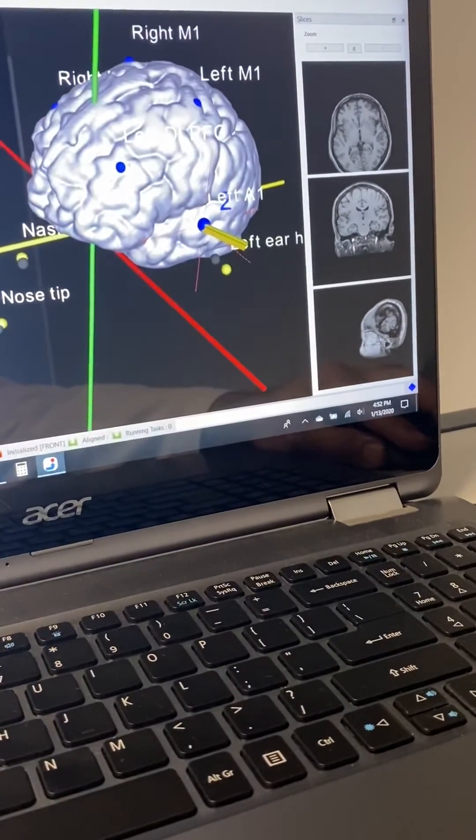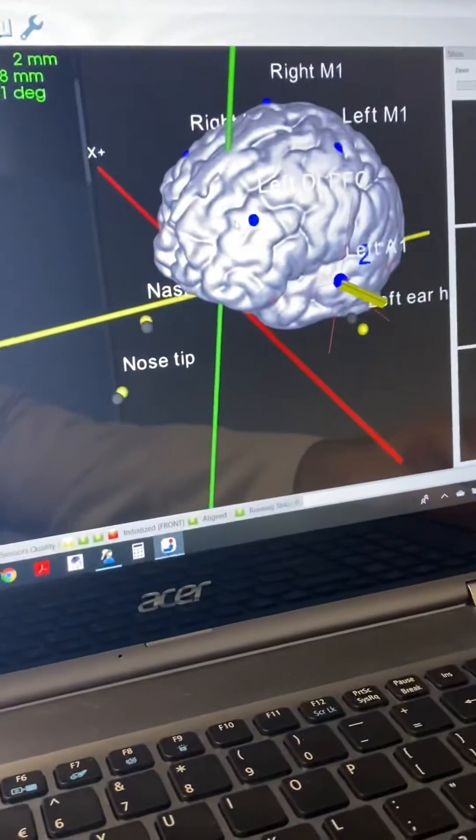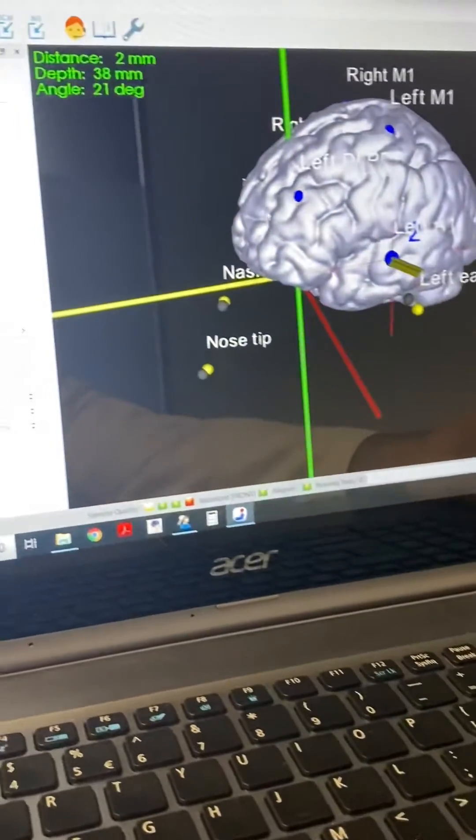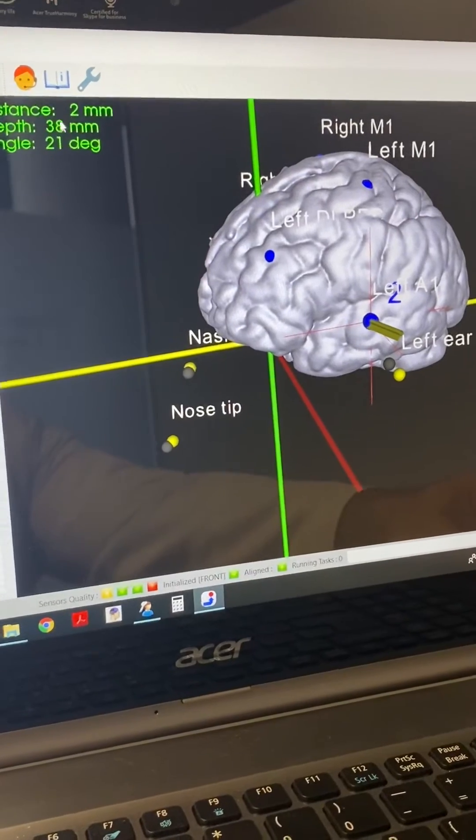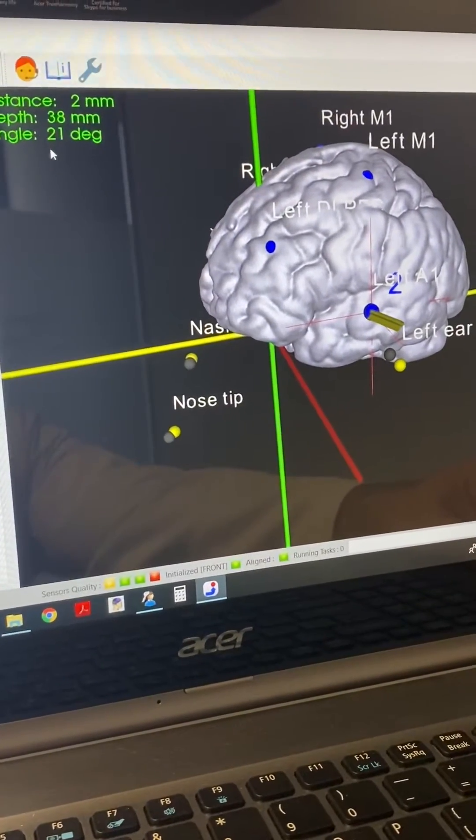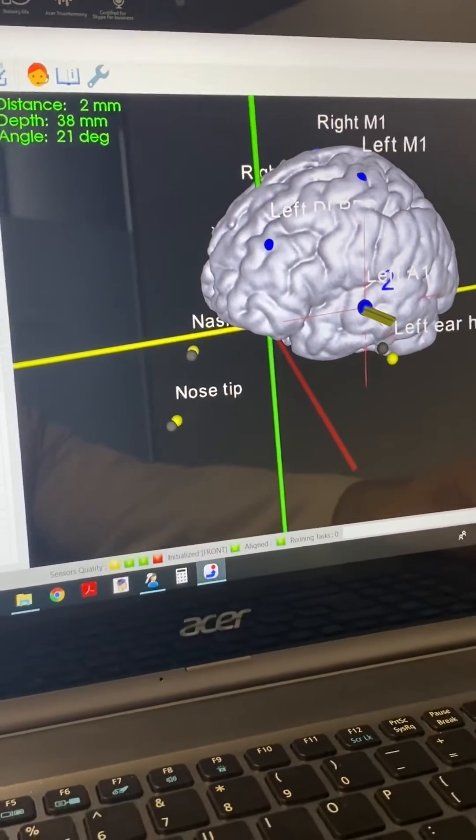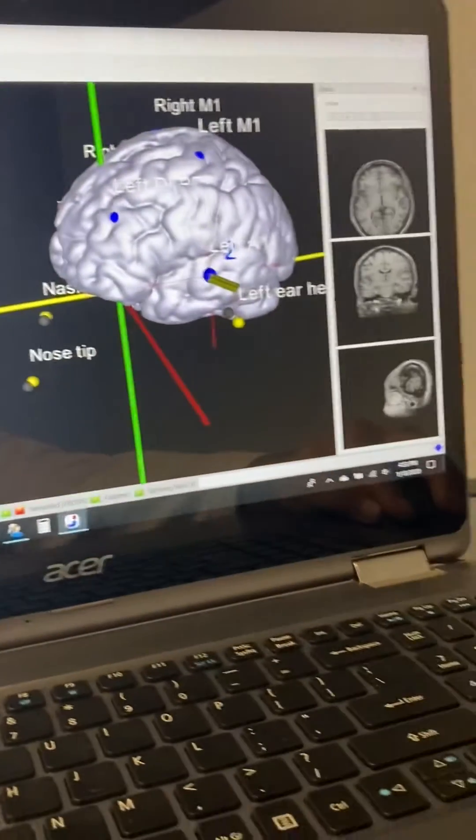Notice the other targets, in fact, the left DLPFC, the right DLPFC. The software gives us a distance from target, which is beautiful at 2mm, depth of 38mm, angle even, and this is just going beautifully.